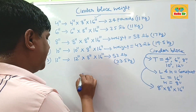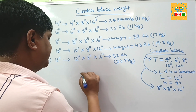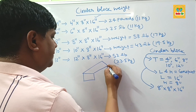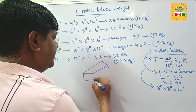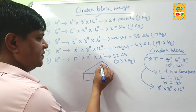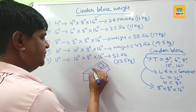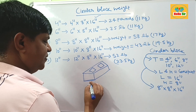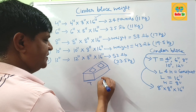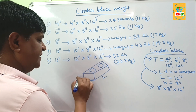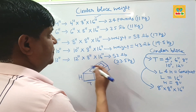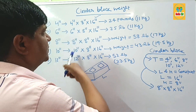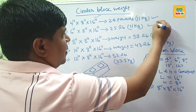All these cinder blocks are hollow in nature and made from light material. Each block has about 2 holes, which are called cells. The dimensions refer to their width or thickness, length, and height. That's why the different kinds of cinder blocks vary in weight.